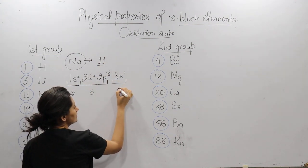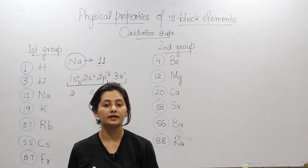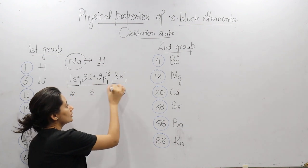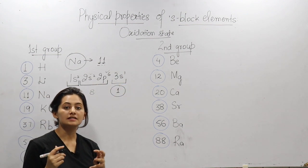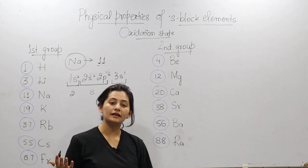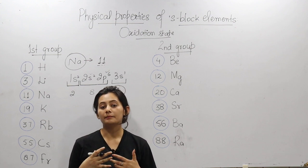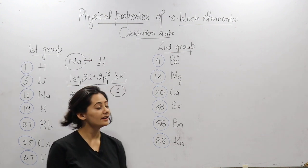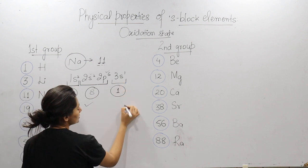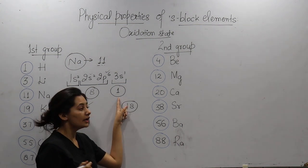In the third shell, maximum electrons that can be accommodated are 18, but we only have 1. That means this 1 electron is not stable — it does not give a noble electronic configuration. Every element needs stability. The first shell is completely filled, the second shell is completely filled, but in the third shell we need 18 and only have 1. So we can handle this in two ways to make the configuration stable.